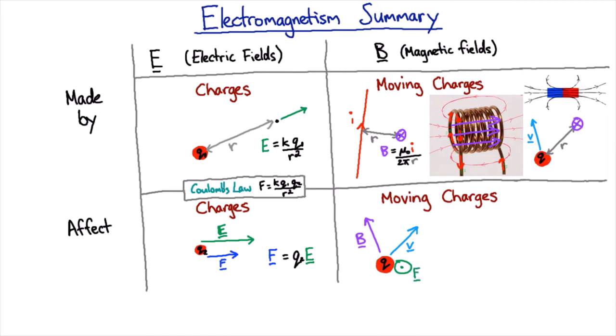And the strength of that force is given by the charge times the velocity times the magnetic field, and there's a sine of the angle between the velocity and the magnetic field. So when they're at right angles, it's just charge times velocity times the magnetic field.